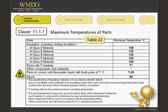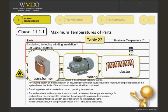We start with reviewing Clause 11.1.1, Table 22, which specifies the maximum temperatures of parts in medical equipment. The first section covers winding insulation. We have Class A through Class H, and these are for equipment with windings such as transformers, motors, inductors, and others.